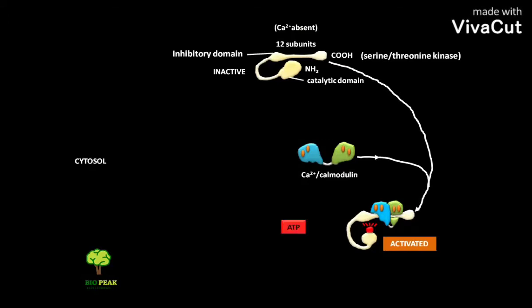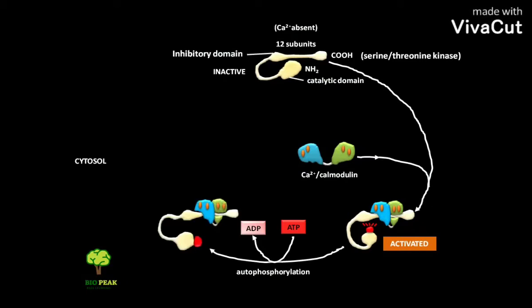The cytosolic ATP is converted into ADP. From this conversion, one phosphate group is released. This released phosphate group causes autophosphorylation of the enzyme. In this autophosphorylation, the catalytic domains of the enzyme phosphorylate the inhibitory domains of the neighboring subunits as well as other proteins in the cell.